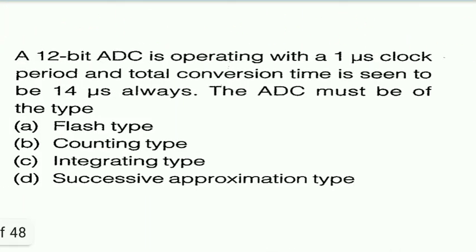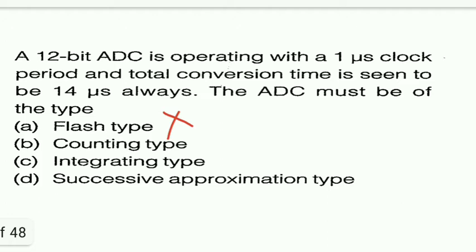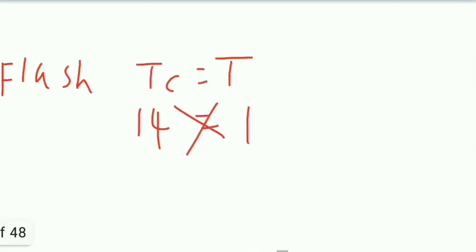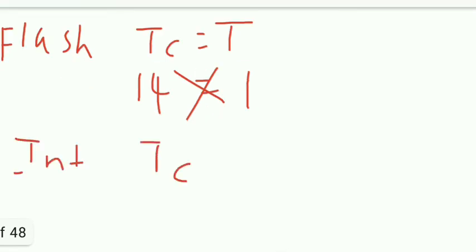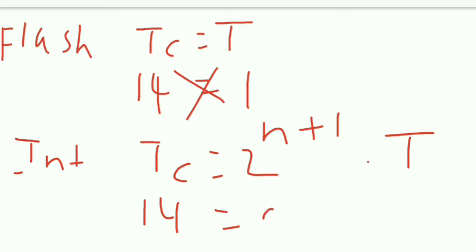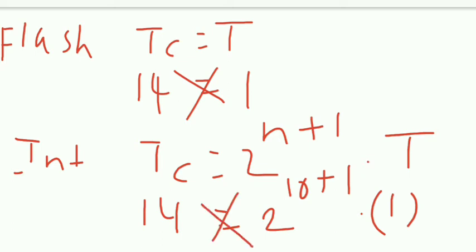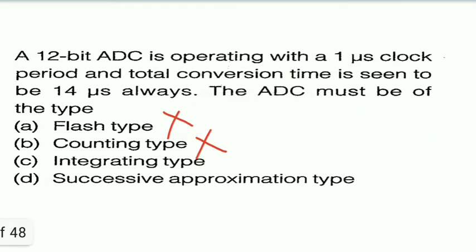For counting type ADC, conversion depends on the amplitude of the input signal, and since amplitude is not given, it is not a counting type. For integrating type, tc = 2^(n+1) × t. With n = 12 and t = 1 microsecond, 2^13 × 1 is far greater than 14, so it is not an integrating type either.